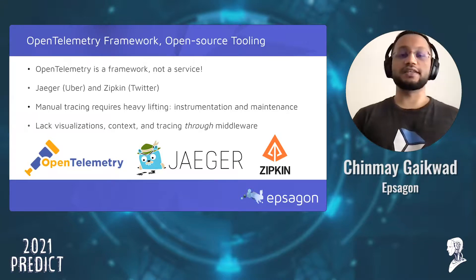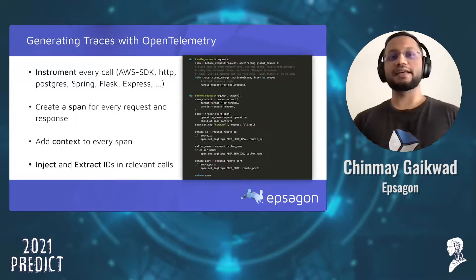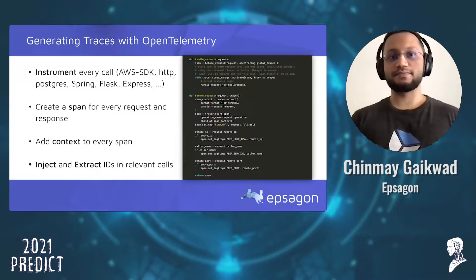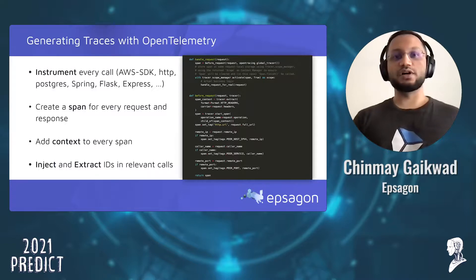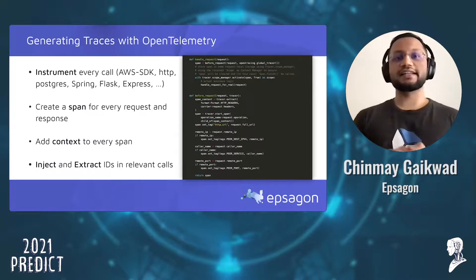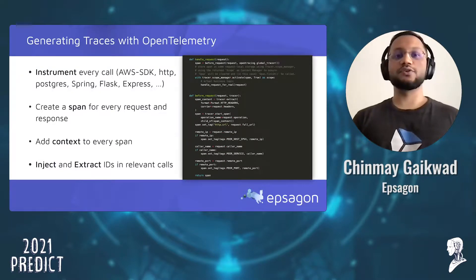In distributed tracing using OpenTelemetry, you would want to instrument each and every API call so that your code can create things called spans, which are the building blocks of a trace. A span represents work done by a single service with time intervals and associated metadata. You should collect and include relevant information in all your spans, including payloads in many cases. By injecting and extracting identifiers from spans in API calls, you can correlate spans from remote services as well.